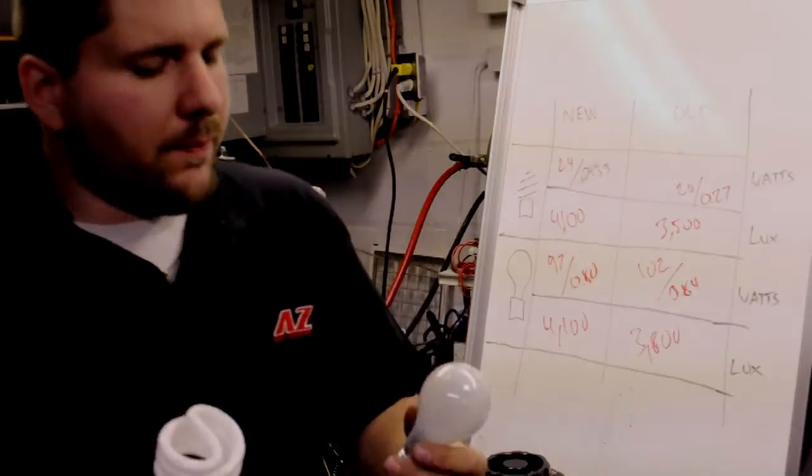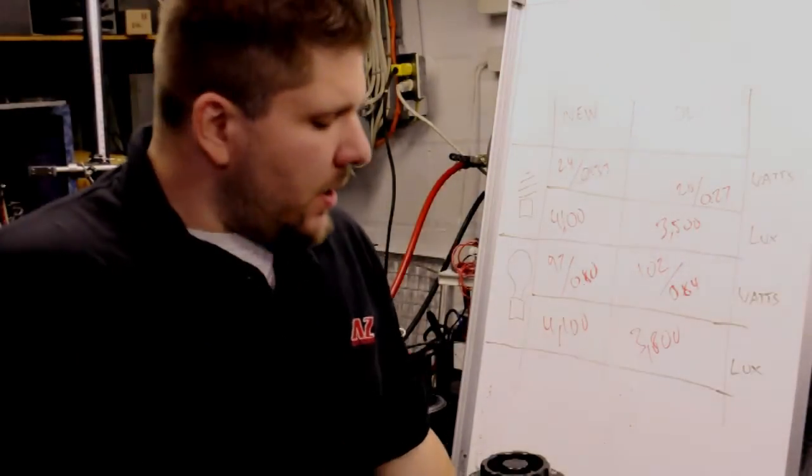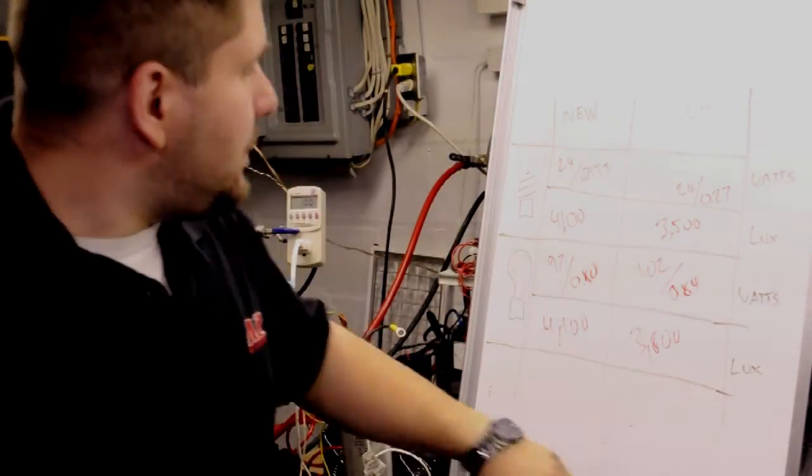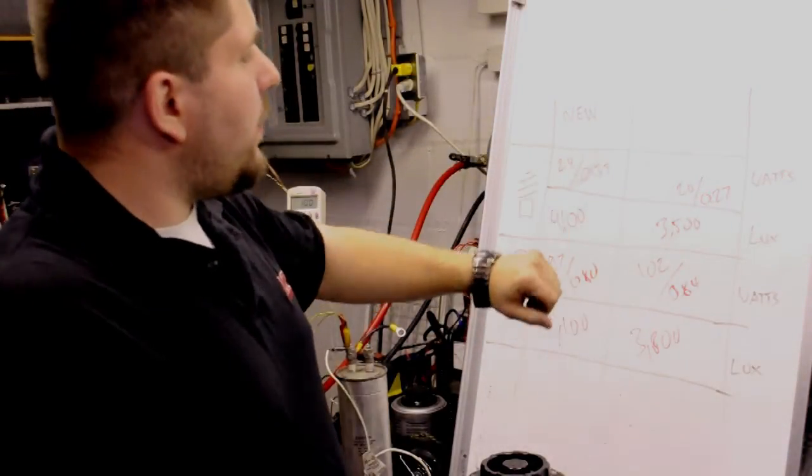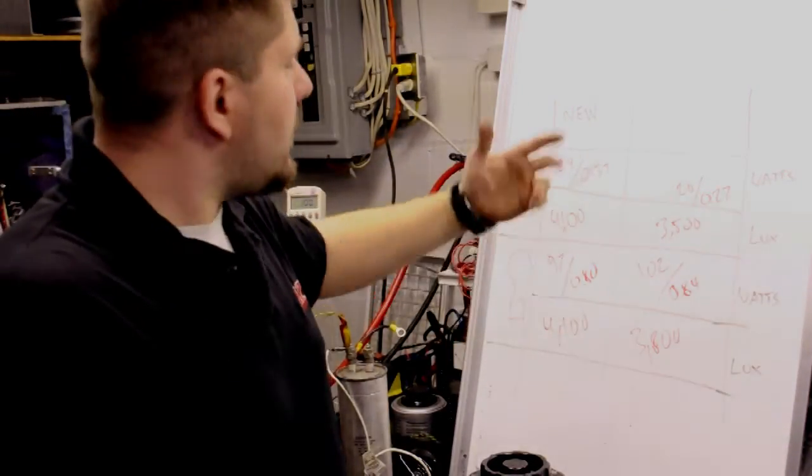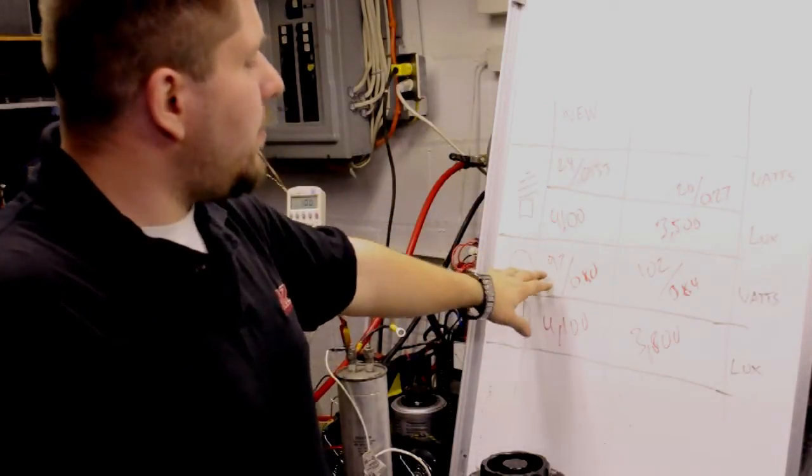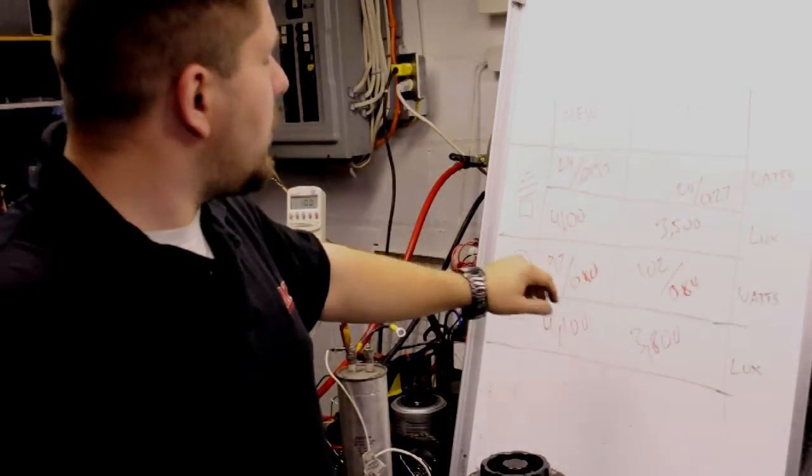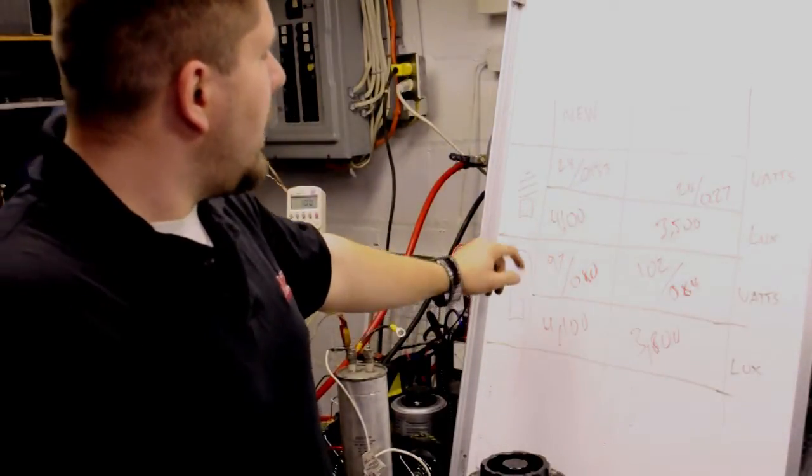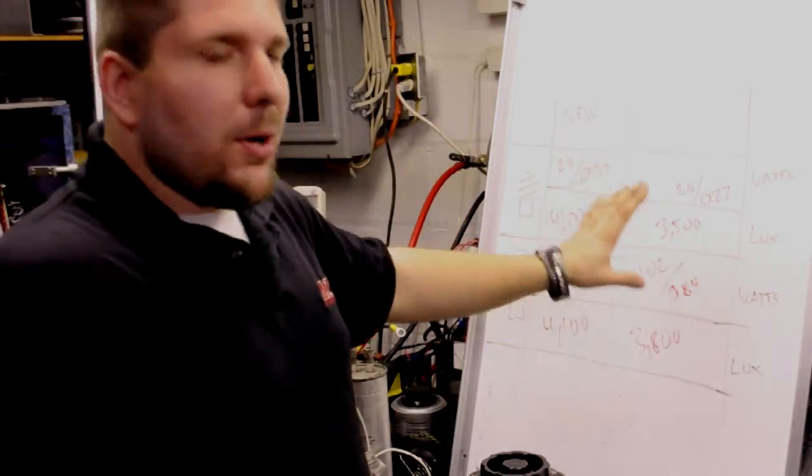So now that we've finished the testing, what does all the data mean? So let's take a look at the data. We look at the new compact fluorescents. The new compact fluorescent pulled 24 watts to produce 4,100 lux. The incandescent pulled 97 watts to produce 4,100 lux. Same light output that holds true to the claim. 100 watt equivalent.